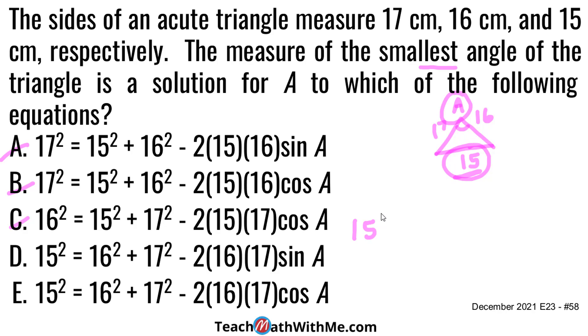And so that 15 squared is what we're equal to on the left hand side, like we said. And what I want to do is this equation is just equal to the other two sides squared and summed, 16 squared plus 17 squared minus two of the other, times the other two sides, cosine of A, which is my unknown. And that corresponds to answer choice E.